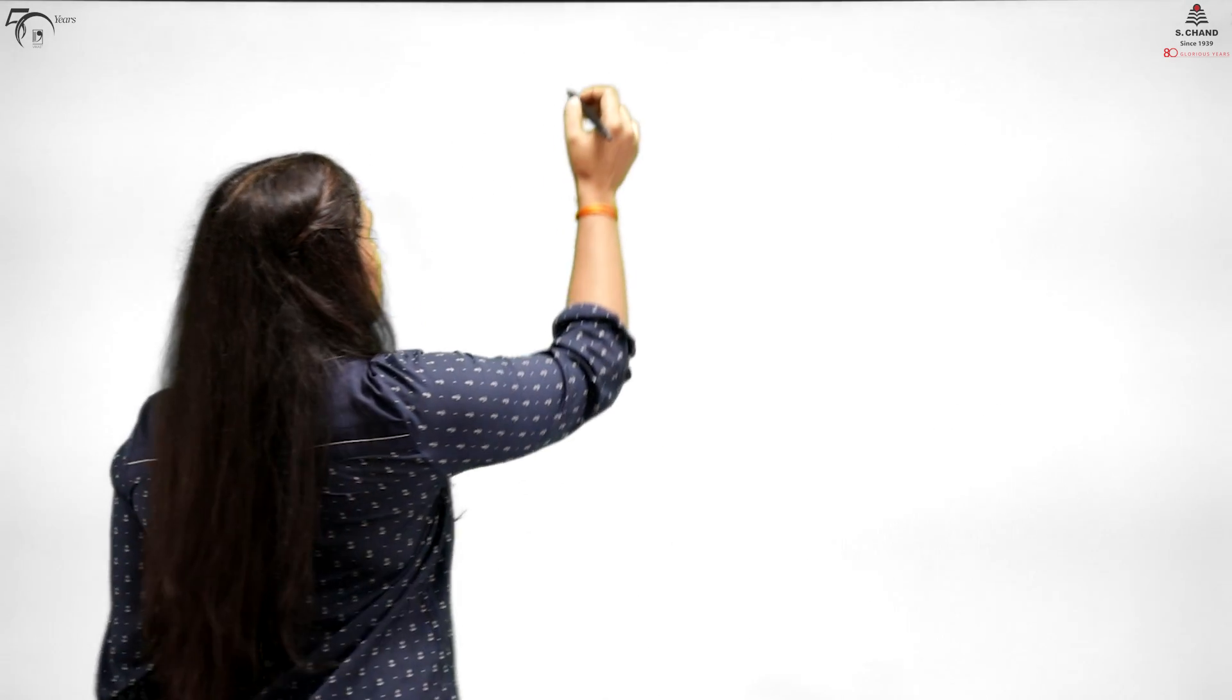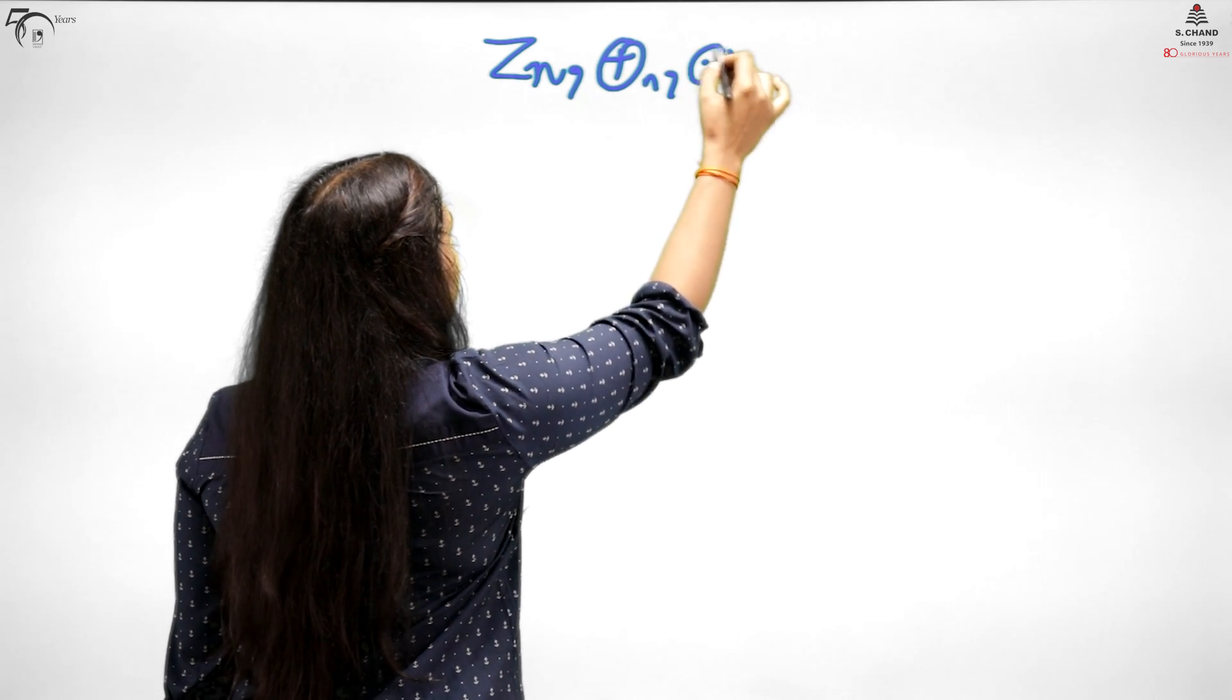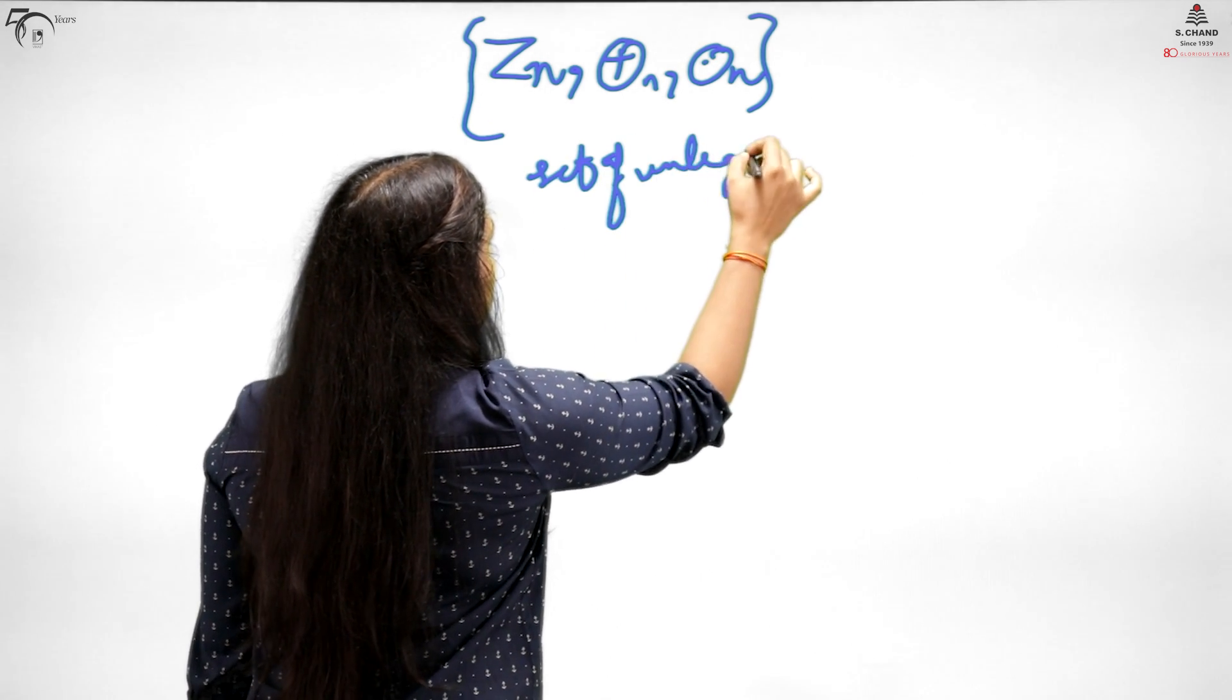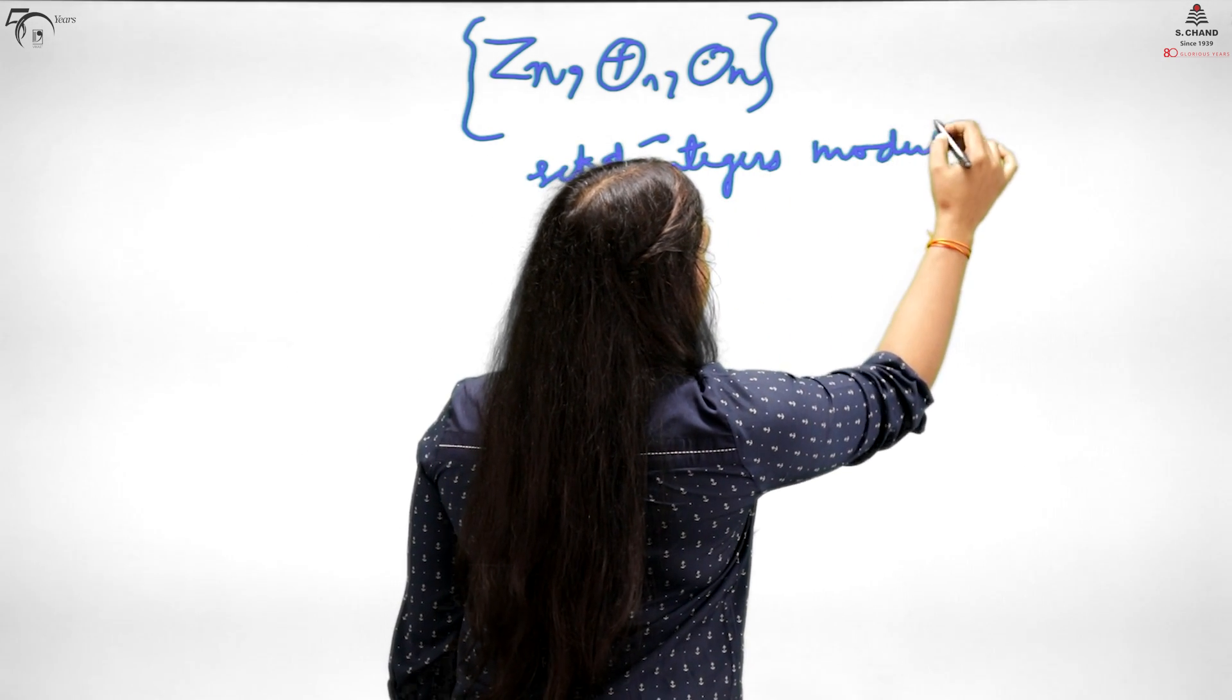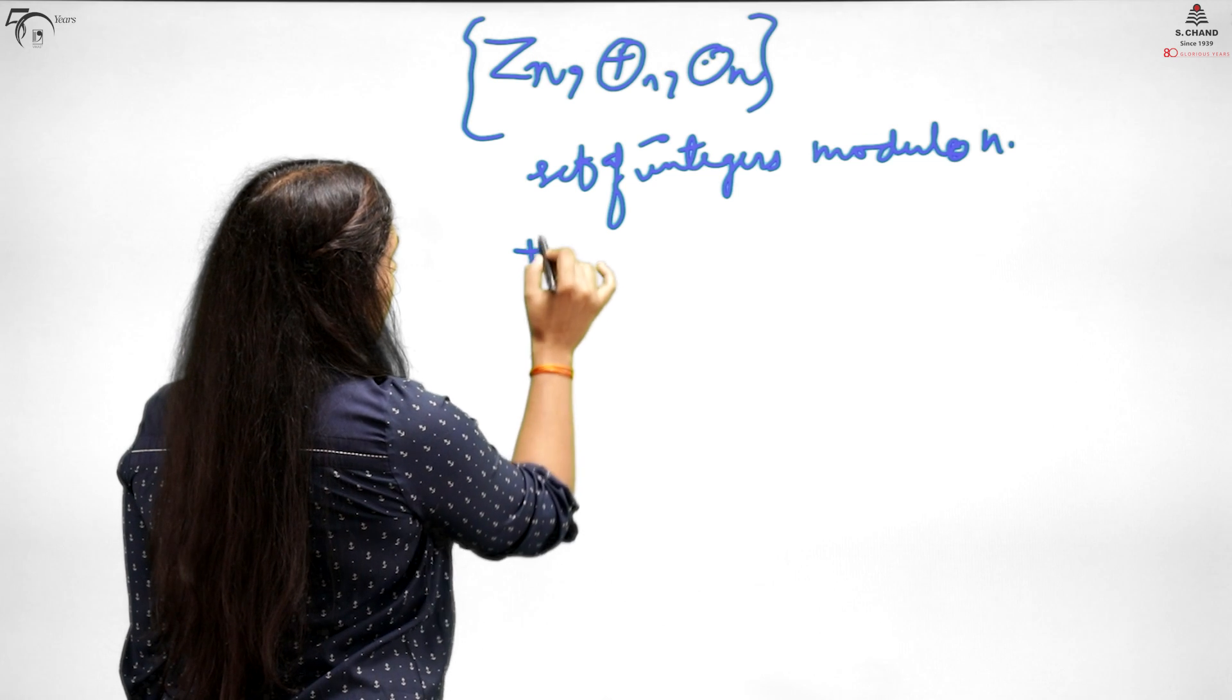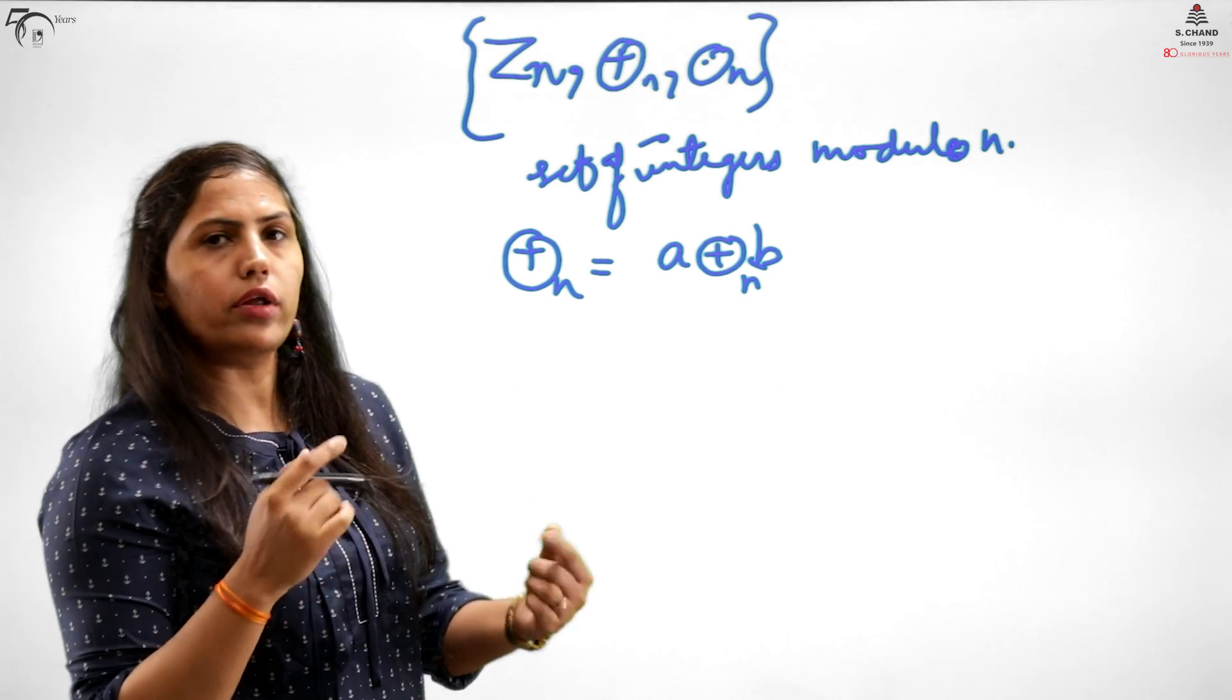Welcome back to Ashchand Academy. Before the break we discussed which number systems are rings, which are commutative, which have unity, which have inverse, and additional properties that make a ring into a field. Now let's discuss Z_n. This is basically the set of integers modulo n.